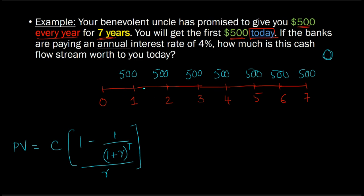But this is not an ordinary annuity. This is an annuity due. Why? Because in this case, your uncle is saying, I'm going to give you the first 500 starting today, which means that the first 500 happens here, today. The second one happens here. The third one happens here. The fourth, the fifth, the sixth, and the seventh. And so yellow is representing an annuity due.